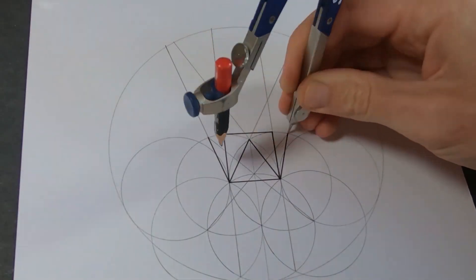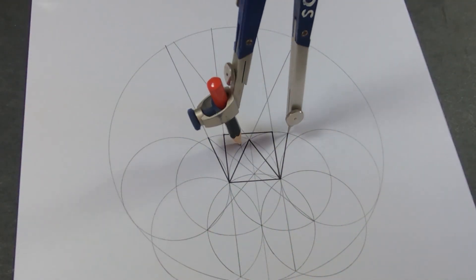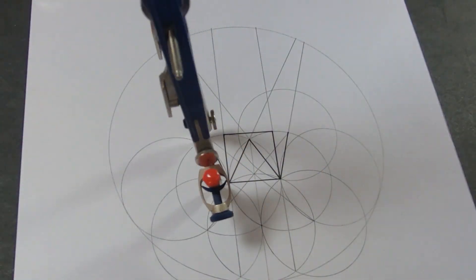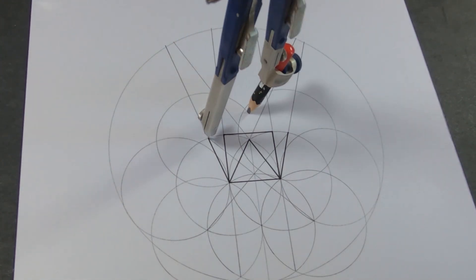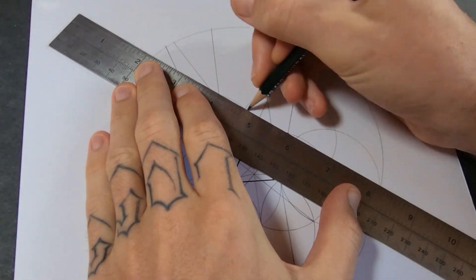To find the top of the pentagon, I have to set the compass to the length of the sides. The point where the circles cross is the top of the pentagon.